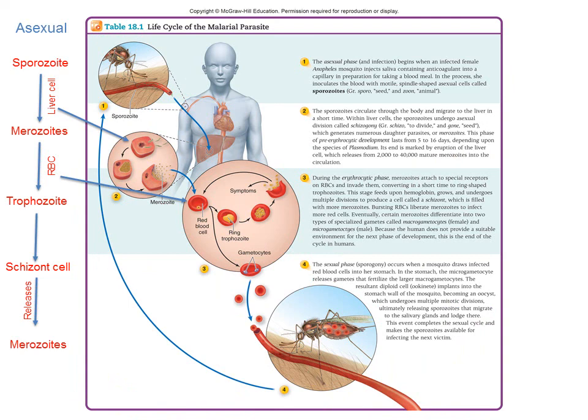Table 18.1 summarizes this entire process. This entire process occurs in the human and is referred to as the asexual reproduction of the life cycle of plasmodium.